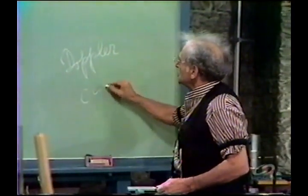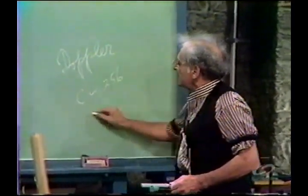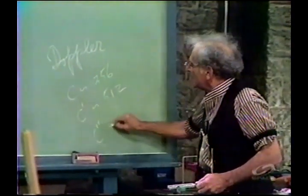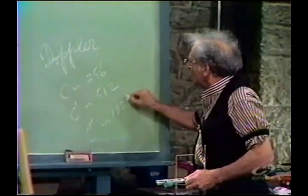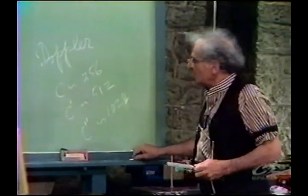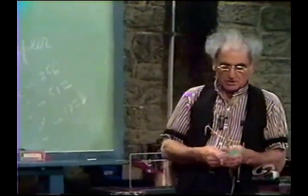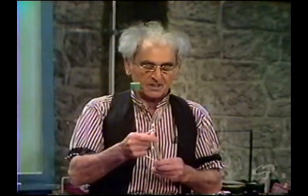Let me strike this fork, which is 512. A C is 256 vibrations per second, an octave above is 512, two octaves above is 1024, and so on. Octaves are separated by frequencies twice the lower. Now, when I strike this fork, you are getting 512 pulses per second.